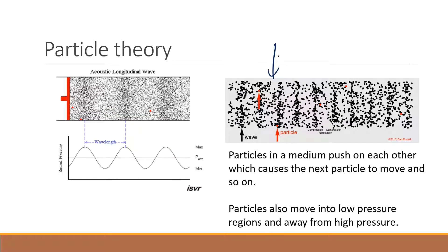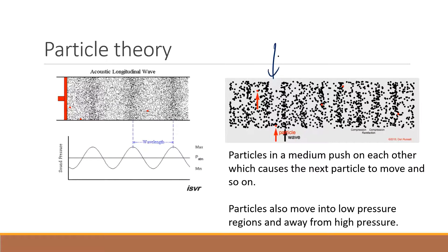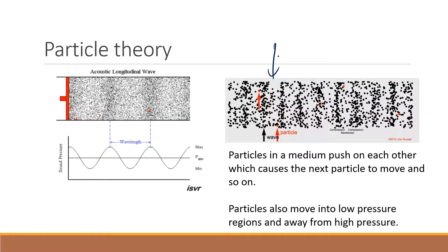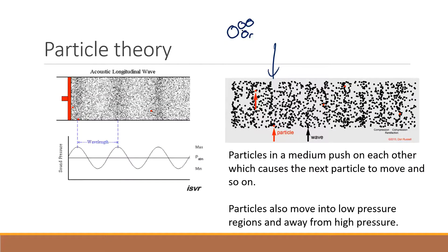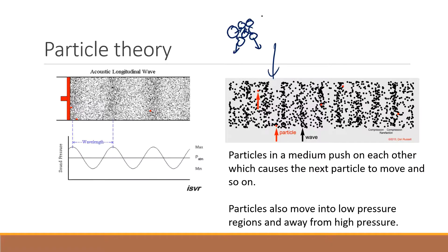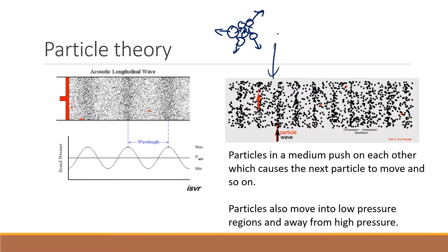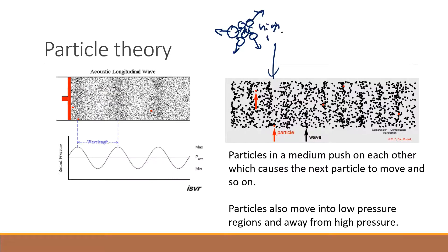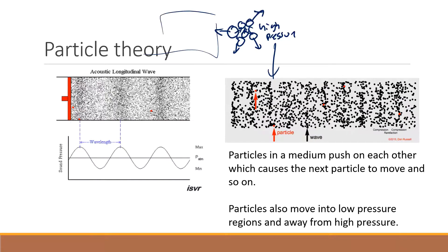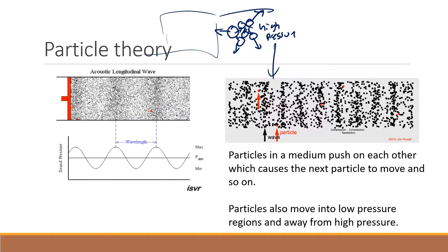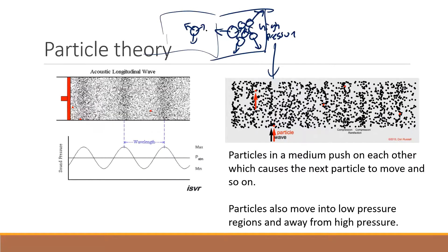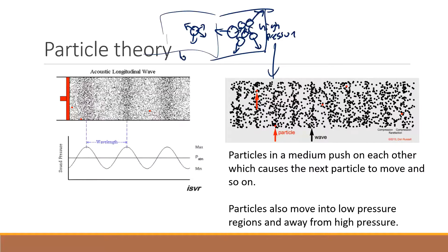Particles tend to move into areas of low pressure and away from areas of high pressure. Why would a particle move from low pressure toward high pressure? If you've got a bunch of particles all together, they're all crashing into each other, and they'll push away from each other — that's an area of high pressure. In an area of low pressure, there isn't much in there, so it makes sense for particles to move into that area because they can move freely without bumping into anything.